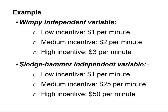A sledgehammer independent variable makes sure there are big differences between conditions. Low incentive gets $1 per minute, medium gets $50 per minute, and high gets even more. If people engaged in 60 minutes of exercise, low incentive would get about $60 at semester's end, medium about $1,500, and high about $3,000. With these big differences between treatment conditions, you're much more likely to get significant differences in exercise minutes.